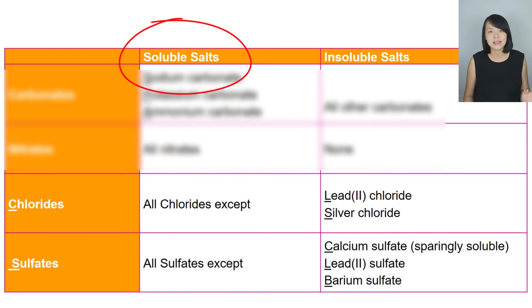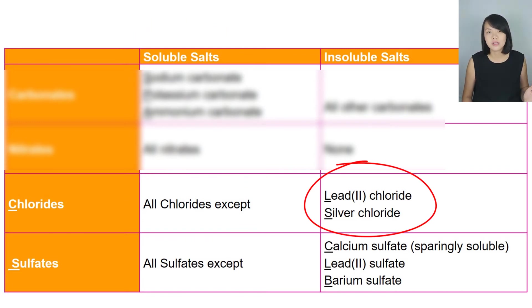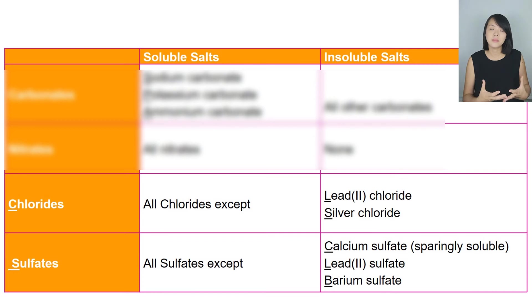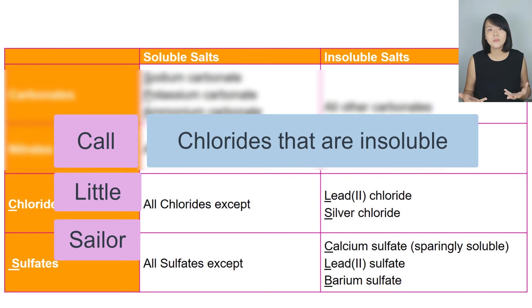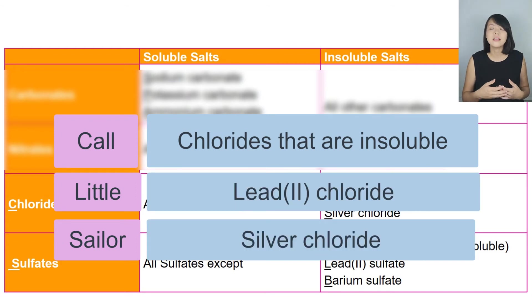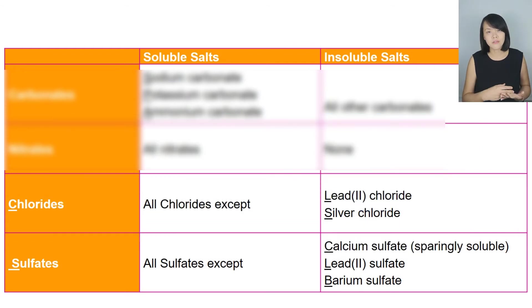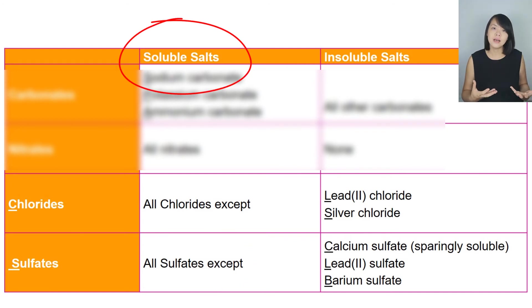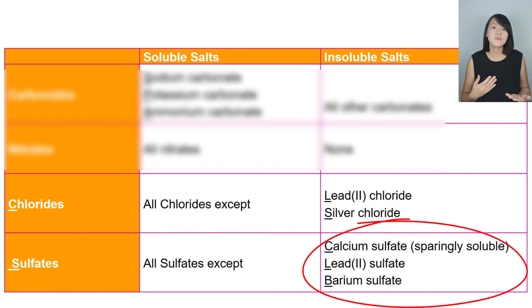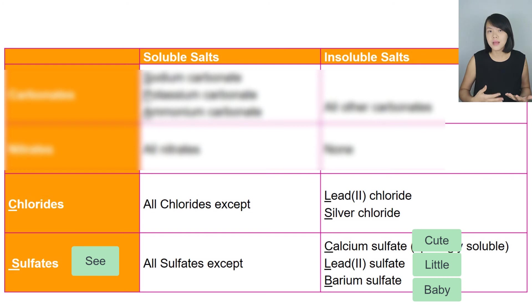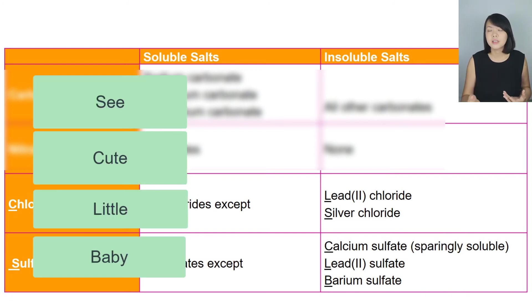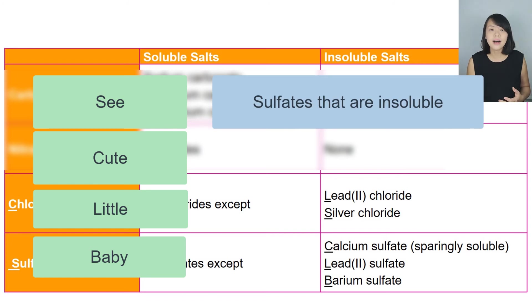All chlorides are soluble except lead(II) chloride and silver chloride — remember this as 'CLX': chlorides that are insoluble are lead(II) chloride and silver chloride. For sulfates, all sulfate salts are soluble except three: calcium sulfate, lead(II) sulfate, and barium sulfate. An easy way to remember is 'CLB': calcium, lead(II), and barium sulfates are insoluble.